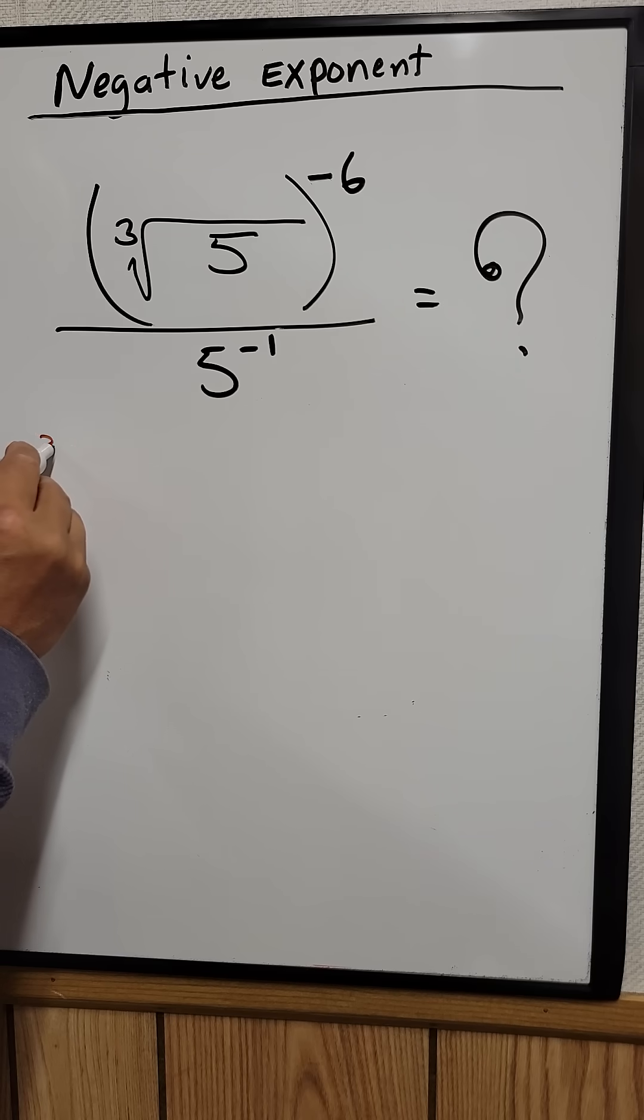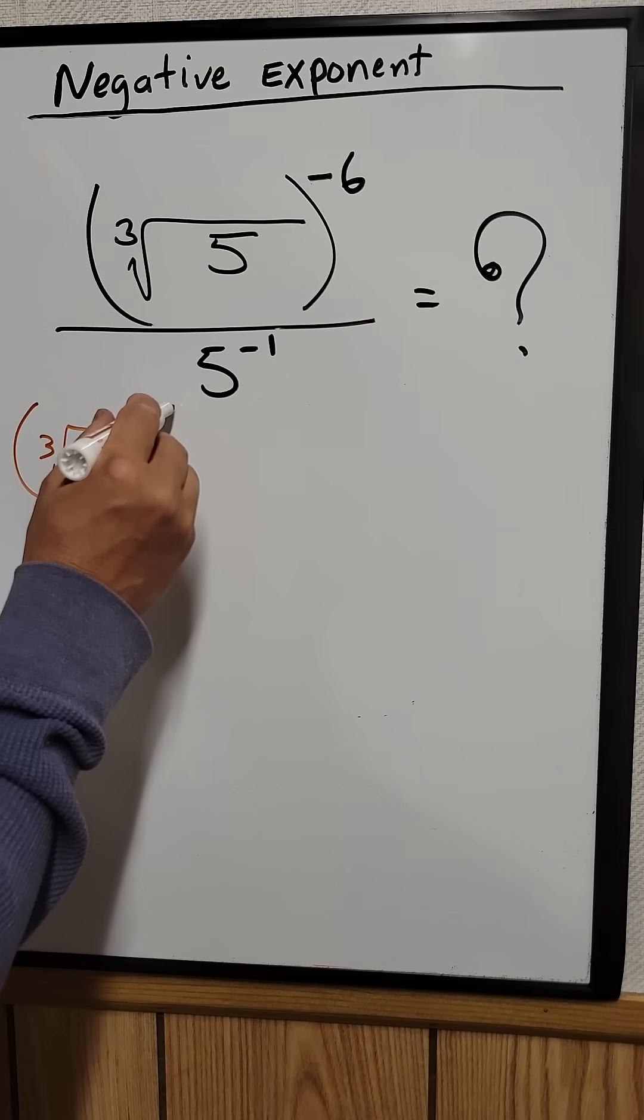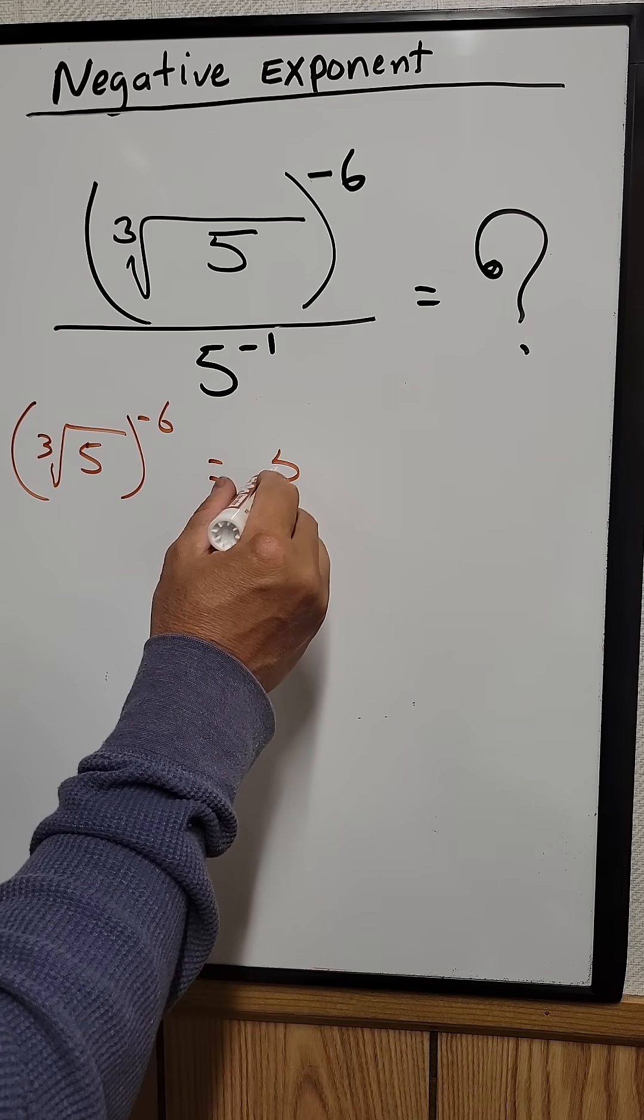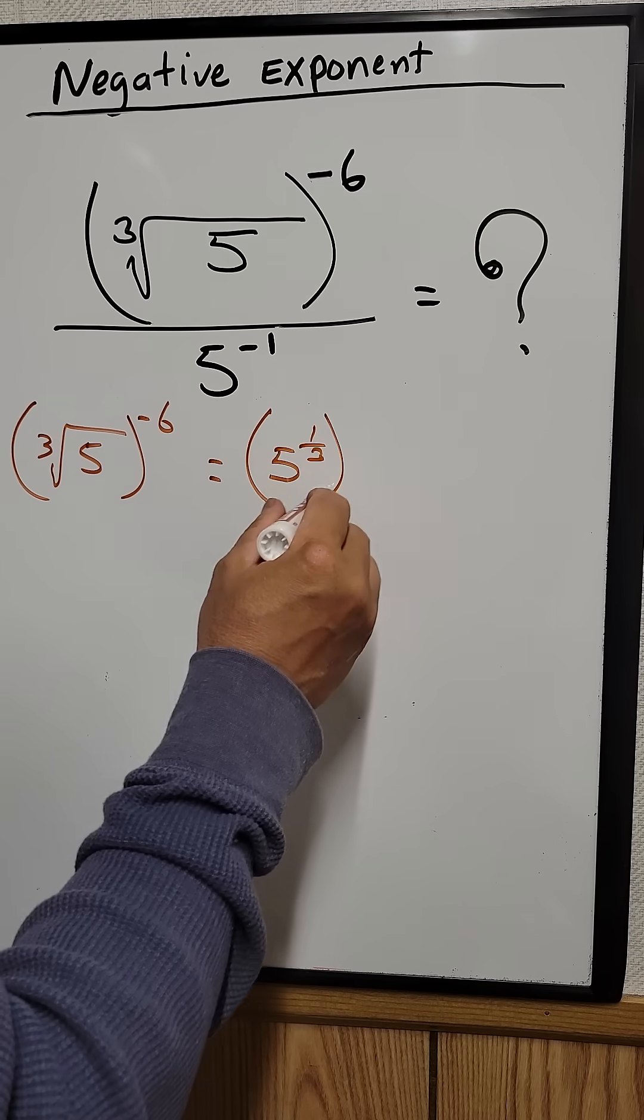So the cube root of 5 raised to the negative 6. Now what is a cube root of 5? We can rewrite that as 5 raised to the 1 third power, then raised to the negative 6.